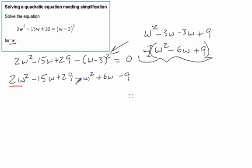Now I can start combining like terms. Here's a w squared, 2w squared, and a minus w squared. So that makes a w squared. Then we've got a negative 15w and a positive 6w. All right, so that makes a negative 9w. And then we've got a 29 minus 9. That makes a plus 20.